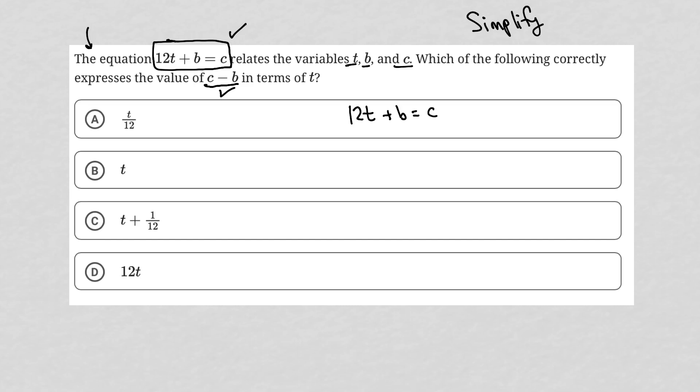Well, the only thing I really need to do here is subtract b from both sides of the equation and what I will have left is 12t is equal to c minus b, which is exactly what the question is asking for.